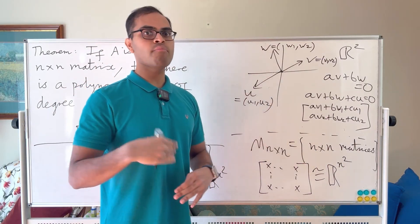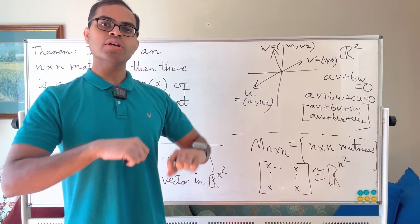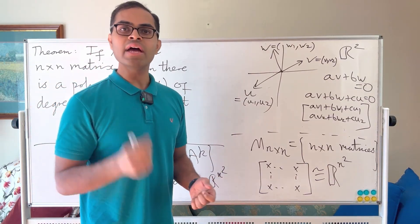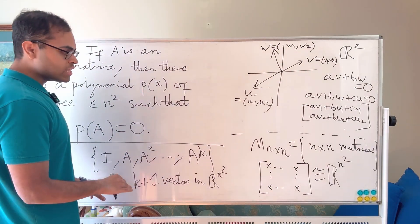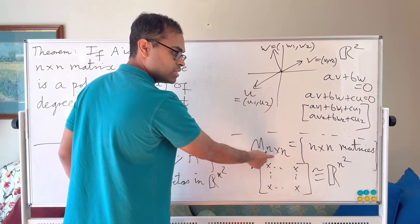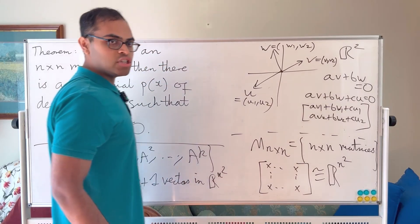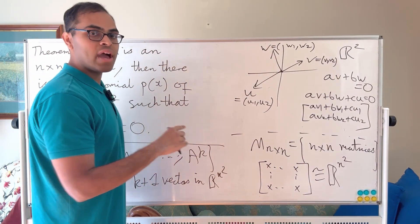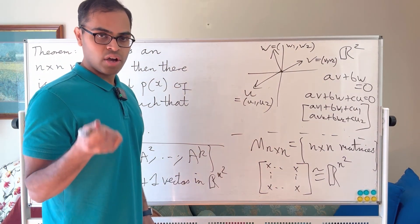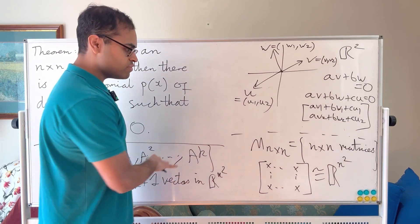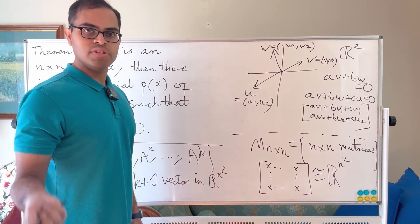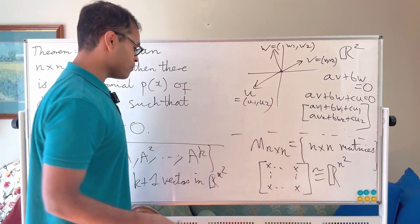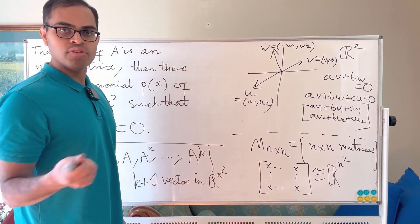So in general, what we say is that if you have more vectors than the dimension, you can always find a relation between them. And that ends the proof because if you think about these powers of A, you know that they're all living inside n squared dimensional space. So if you have at least n squared plus one of these entities, which we think of as vectors in M_{n×n}, you can always find a relation between them, a linear relation between them.